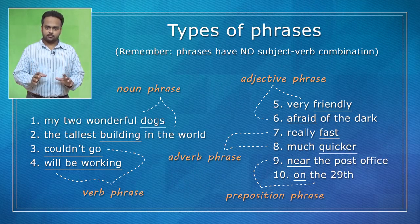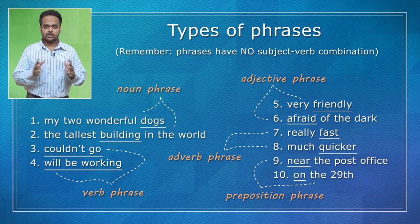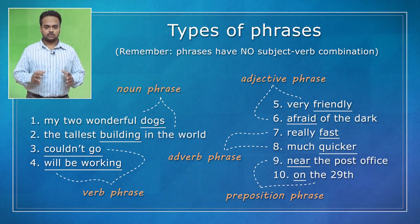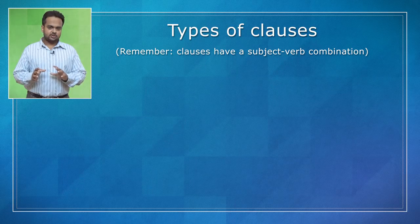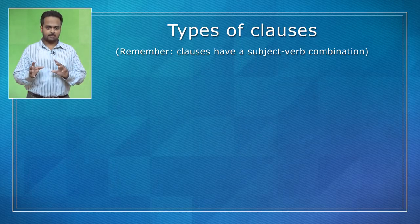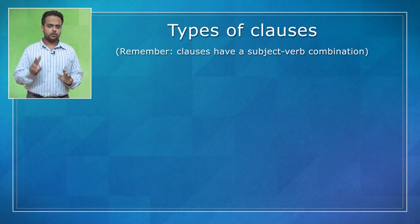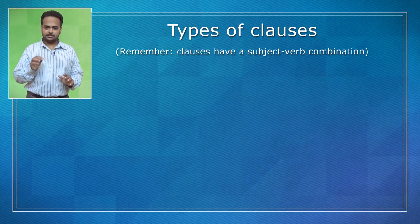These are the most common types of phrases that you will come across. Remember, these are phrases because they don't have a subject-verb combination. Now let's look at some examples of clauses. A clause is just like a phrase — it's a group of words — but a clause has a subject-verb combination. In English, there are many different kinds of clauses, but the two most important that you need to know about are independent and dependent clauses.